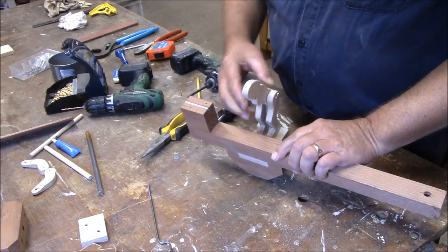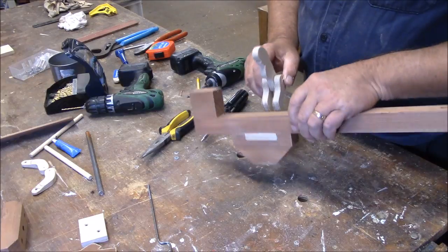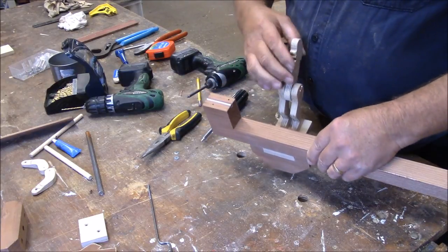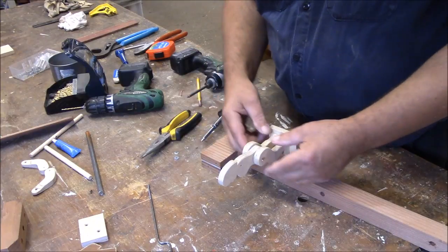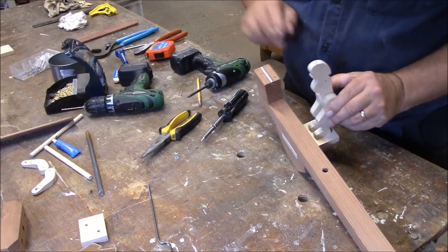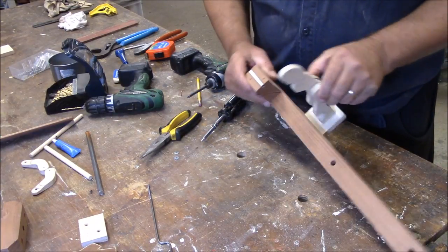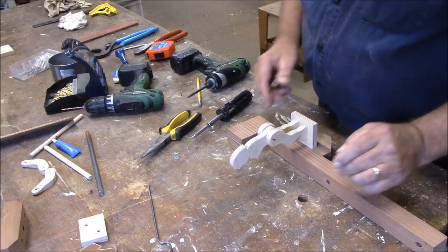So when you want to take it apart, you just straighten out the wire, pull out the wire, very simple. And you'll need to do that when you're going to paint it, so we're just putting her together so you know how it goes together.